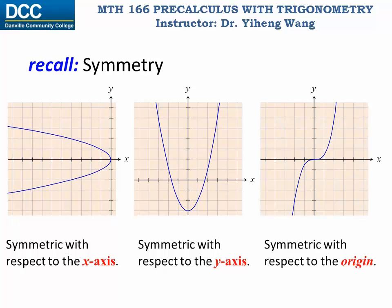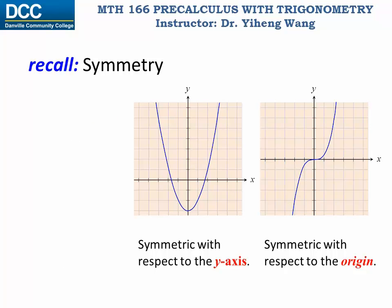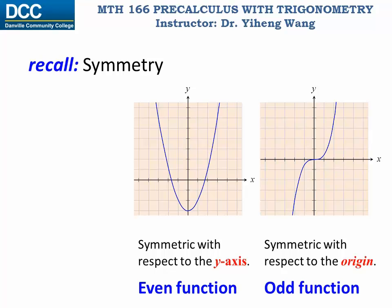Now, if a graph is symmetric with respect to the x-axis, it cannot pass the vertical line test, therefore this type of graph cannot represent a function. The other two types of graphs can both represent functions. So if a function is symmetric with respect to the y-axis, then it is an even function. If the graph of the function is symmetric with respect to the origin, it is known as an odd function.